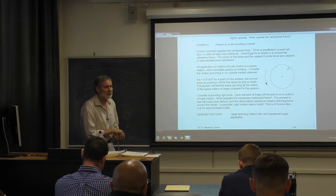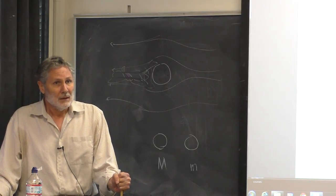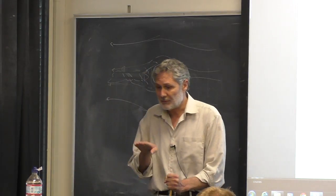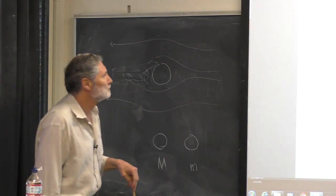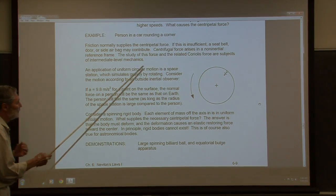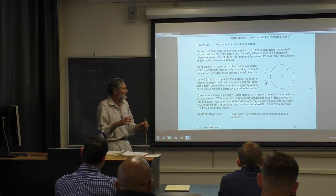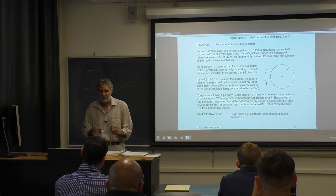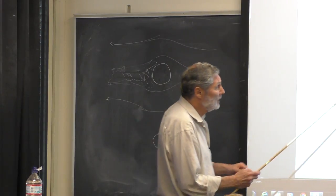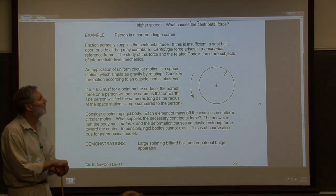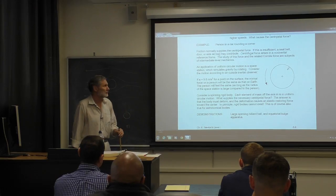Practically: you're in a car rounding a corner — there must be a centripetal force. It can be supplied by the seat, the seat belt, or the door. A word of caution: you've heard of centrifugal force — that's a force in a rotating frame, not an inertial frame, and we won't cover it here. There's also the Coriolis force, arising for the same reason. Both are covered at the 2000-level mechanics course.